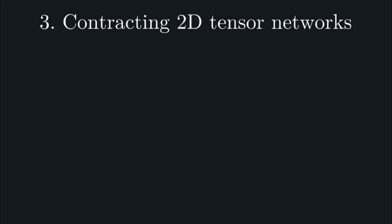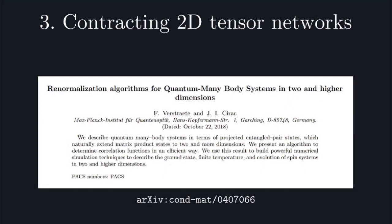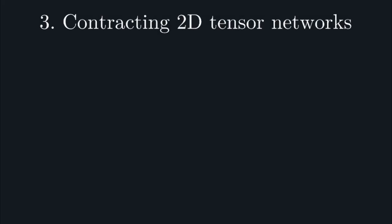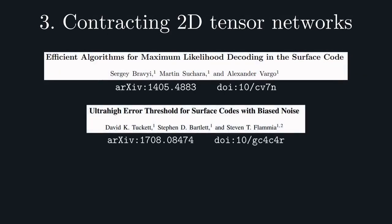So, as I've alluded to, the idea is going to be to reduce the 2D problem down to a 1D problem. The approach we're going to consider originally arose in the context of the condensed matter literature in this paper by Verstraete and Cirac. In the context of decoding, this algorithm also formed the core of the aforementioned paper by Bravi, Suchar, and Vargo, as well as two follow-up papers from the Sydney group.